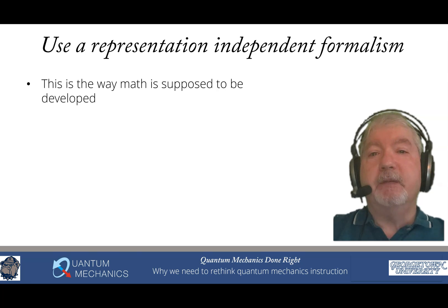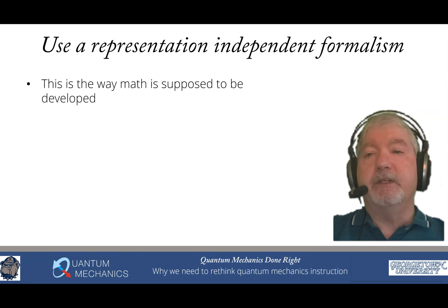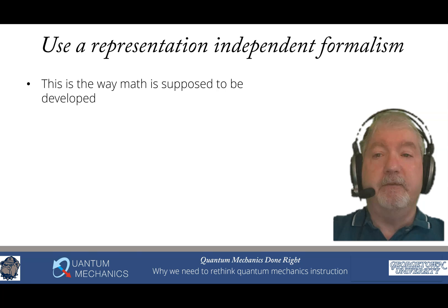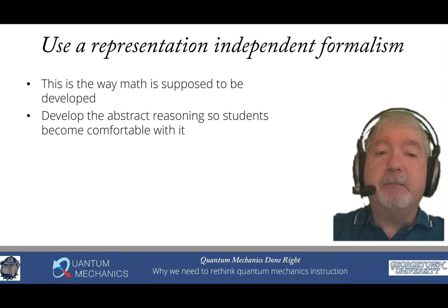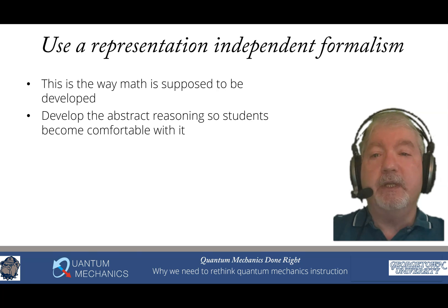We're going to use a representation-independent formalism. All mathematicians will tell you this is the way all theory should be developed. Surprisingly, quantum mechanics is one that isn't developed this way. We're going to develop the abstract reasoning. So this is one of the things that makes quantum mechanics hard. You have to be able to reason abstractly. If you cannot, then you will not be able to do quantum mechanics. But it's a process. Anyone can do this. You just need to be taught how to do it and become comfortable with it. So that's one of the things that we do.